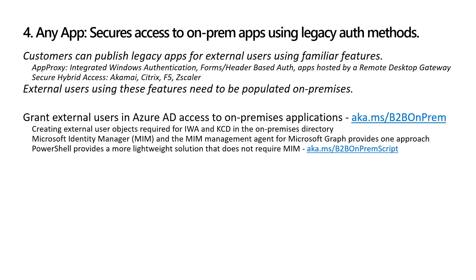Any app: the apps being protected don't need to be authenticating against Azure AD in order to be protected by Azure AD. You can publish legacy apps using App Proxy — apps using Windows authentication, forms-based auth, header-based auth, or apps hosted behind a remote desktop gateway. Applications using third-party solutions like Akamai, Citrix, F5, or Zscaler can be protected by Azure AD using secure hybrid access capabilities. For external users, the one caveat is they need to be populated on-premises to enable on-premises applications to be protected when published to external users.